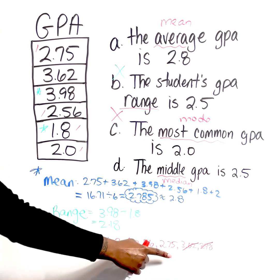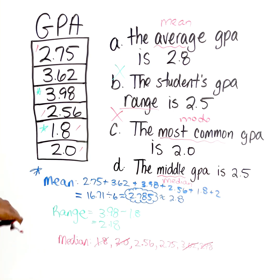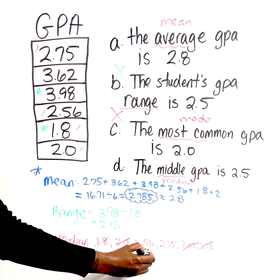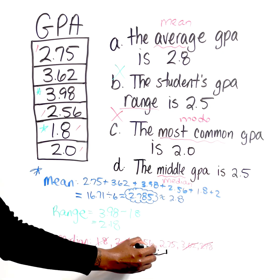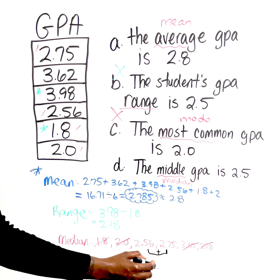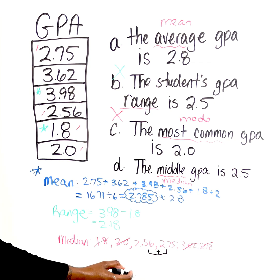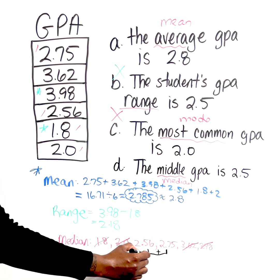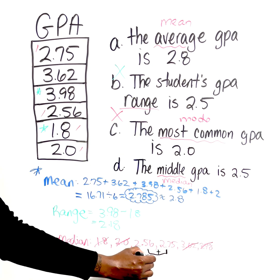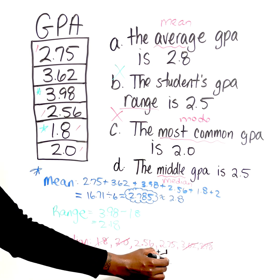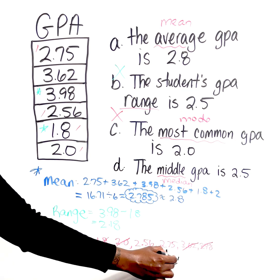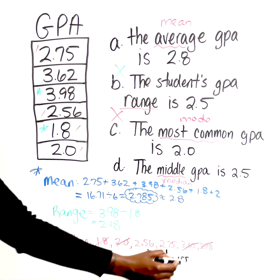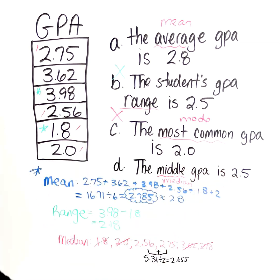That leaves us with 2.56 and 2.75. So that means that we need to find the average of those two values, which means we're going to add them together. So if I add 2.56 and 2.75, that's going to give me 5.31. And then of course, we're going to divide by 2 because we have two values and that's going to give us 2.655, which is not 2.5.